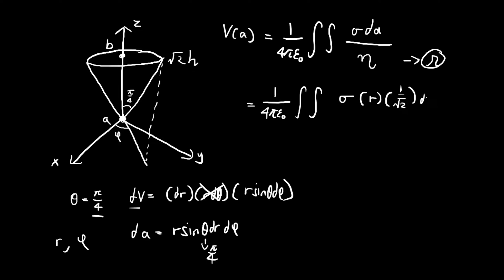So we have r times 1 over square root of 2, dr d phi, divided by eta. The distance from point A to whichever point we're evaluating is just r, the radial component. For the bounds, r is going to go from 0 to square root of 2 times h.